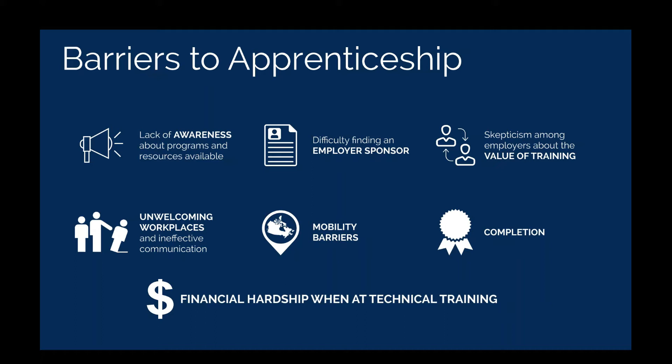We hear about employer barriers — prospective apprentices may have difficulty convincing employers to register them because the value proposition of apprenticeship training isn't always clear, or the company culture simply isn't focused on training and development. Unwelcoming workplaces are also an issue, particularly for underrepresented groups where women and other minority groups don't receive the quality of training or support they need to progress. Mobility has been identified as a challenge — until recently it was difficult for apprentices to move between provinces to find work, though apprenticeship harmonization and the apprentice mobility protocol are going a long way to addressing this.